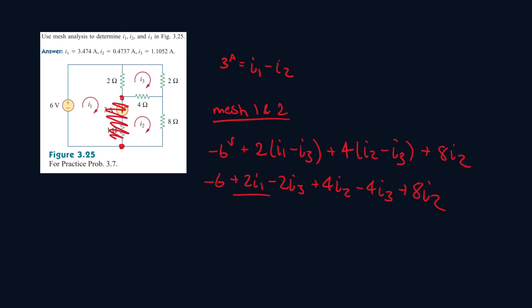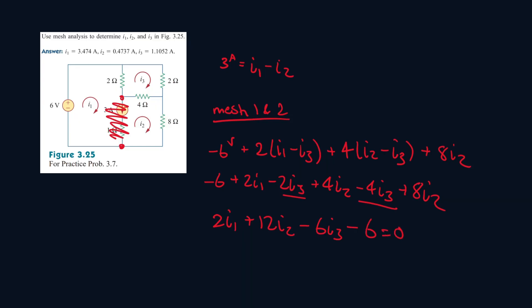Let's collect like terms. This is the only I1 we have, so there's a 2I1. Then we have two I2 terms: 8 plus 4 is 12, so 12I2. We have these I3 terms, so it'll be minus 6I3. Then minus 6 equals 0. Let's bring the 6 to the other side, so it equals 6.